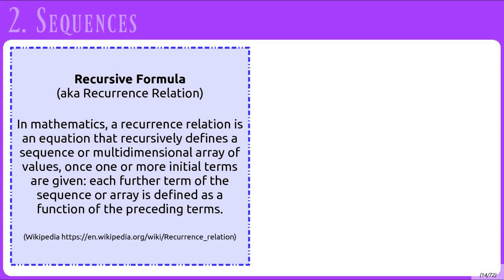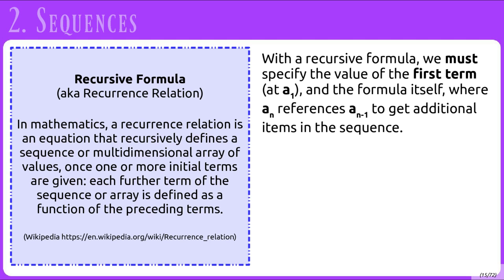Let's begin by defining what these two formulas are. According to Wikipedia, a recurrence relation is an equation that recursively defines a sequence of values. Once one or more initial terms are given, each further term is defined as a function of the preceding terms. With a recursive formula, we must first specify the value of the first term, written as a sub 1, and also specify a sub n, which references the value at a sub n minus 1.